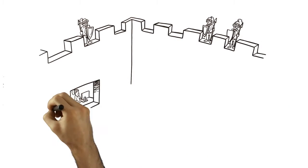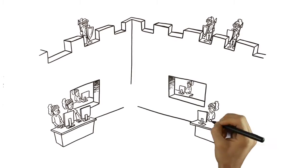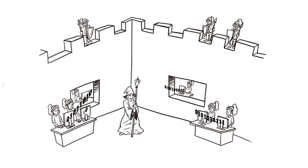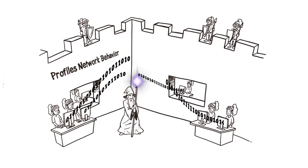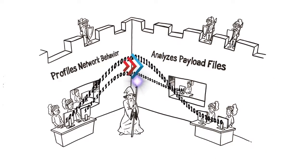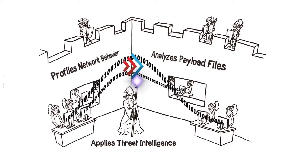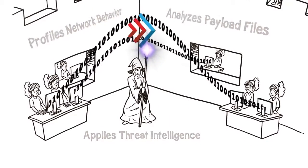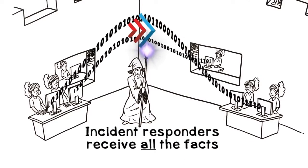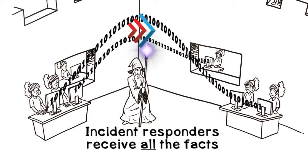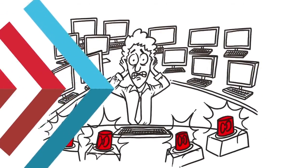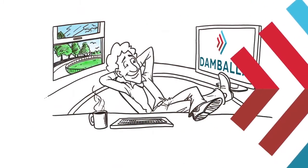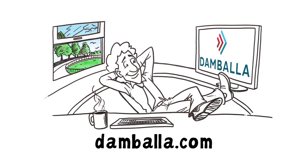Stop the noise. Instead of noisy alerts, Damballa Failsafe issues a definitive verdict when a device is infected. Along with sandboxing, Failsafe automatically profiles network behavior, analyzes payload files, and applies threat intelligence. These multiple detection techniques help prove infection beyond a reasonable doubt. Incident responders receive all the facts so they can act immediately to prevent damage. Learn how Damballa fills the gap between failed prevention and incident response at Damballa.com, and bring peace and quiet back to your network.